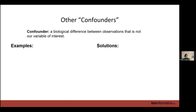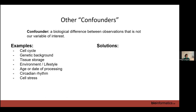When normalizing, we may also want to consider other potential confounders - biological effects that change UMI counts in our gene expression matrix but aren't what we care about. These include the cell cycle, genetic background (if using patient data or tumors), tissue storage duration, environment, lifestyle, date, age of processing, circadian rhythm, and cell stress. There are many possible confounders you can think of.